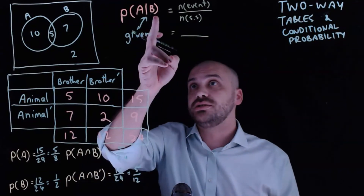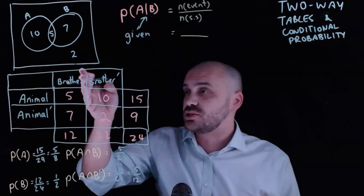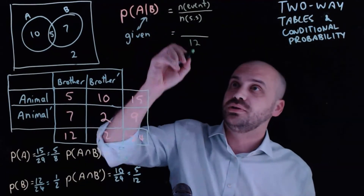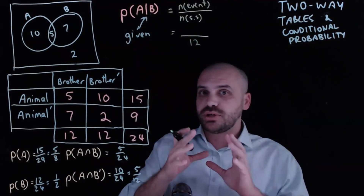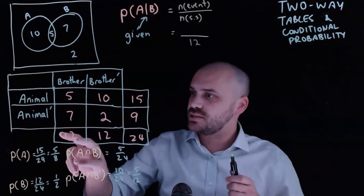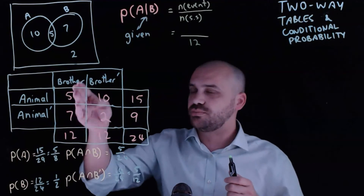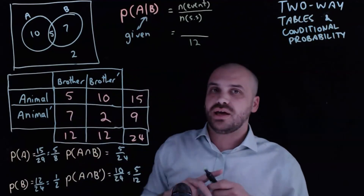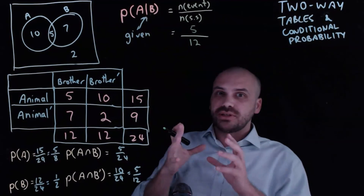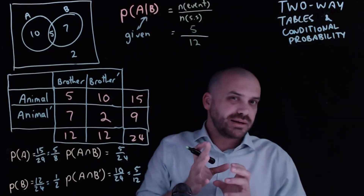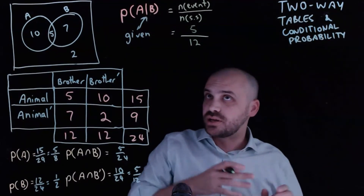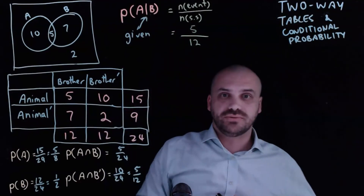So our sample space has changed — it's not 24, it's 12, the people who have a brother. And we're looking for the number of people in that group of 12 who also have an animal in their house, which is 5. So the probability that someone has an animal given that they have a brother is 5 out of 12.